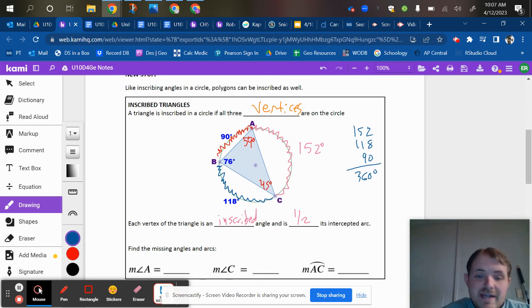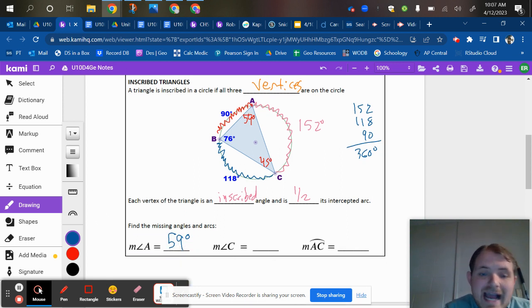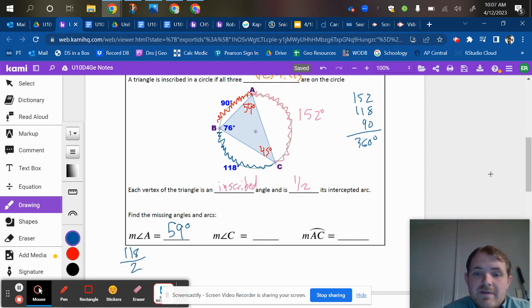So we've already found angle A is 59. And again, that comes from half of 118. We found that angle C was 45. And that comes from half of 90 degrees.